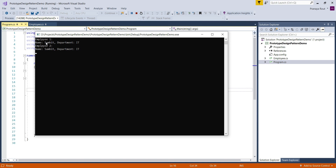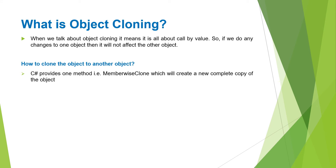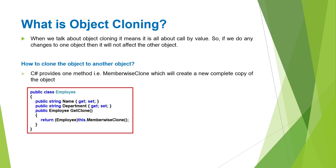Now I hope you understand this concept. Let us understand what is object cloning. When we talk about object cloning, it is all about call by value — meaning if you do any changes to one object, it will not affect the other object. C Sharp provides one method called memberwise clone which will create a new complete copy of the object. Here we created one method called getClone, and as part of that method we are returning a clone object of the employee class using the memberwise clone method.